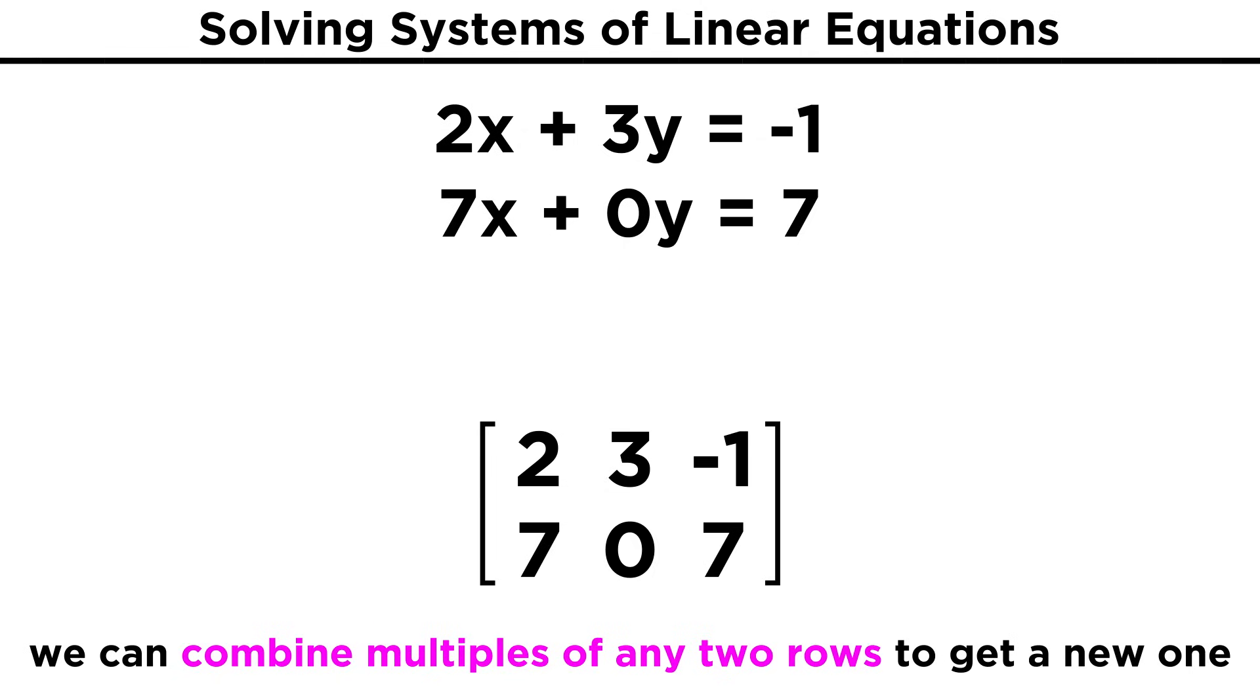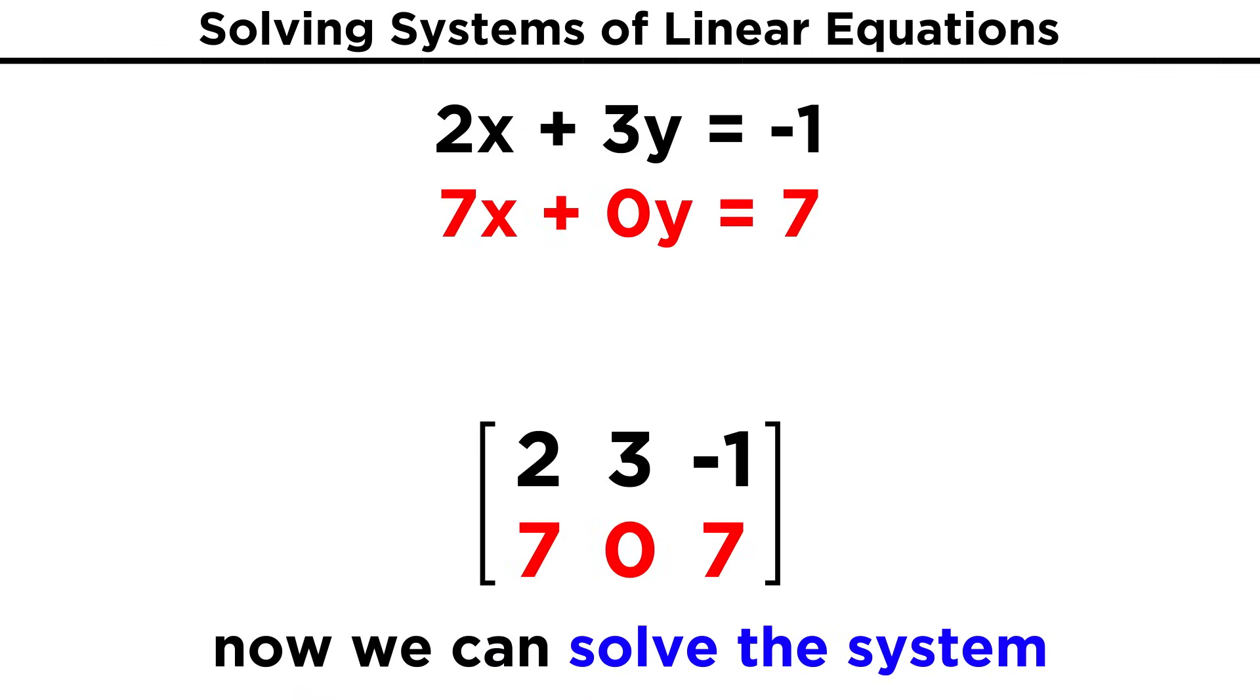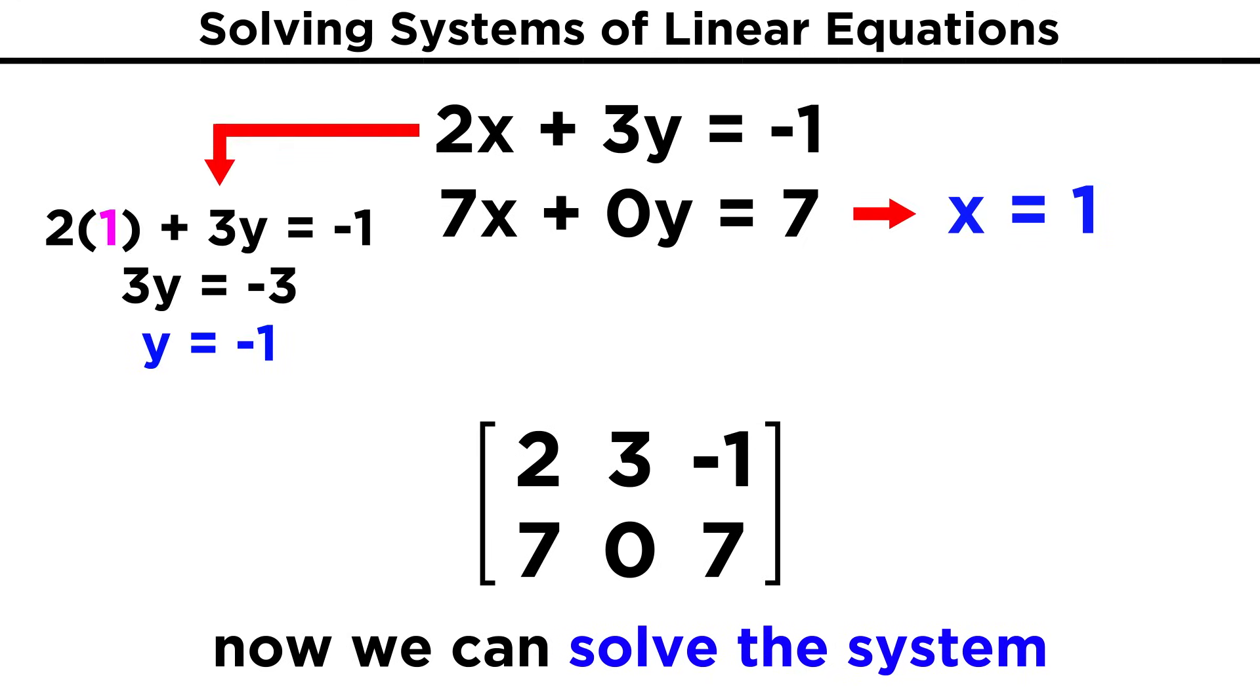Combining this with the previous technique, where we could multiply or divide any row by some number, we can actually add or subtract any multiple of any row to any multiple of any other row to get a new row, or even simply swap two rows without changing any of the values, all without affecting the solution to the system. This opens up a lot of possibilities for what to do with a system of equations. Now take a look at what we are left with in the second row: 7, 0, 7. This is the same as the equation 7x + 0y = 7. This is trivial to solve, x = 1. Plugging that into any other equation, we end up with -1 for y, and we have solved the system. So as we can see, the key is getting rows with zeros in them.